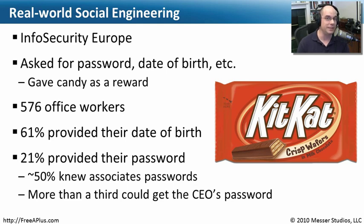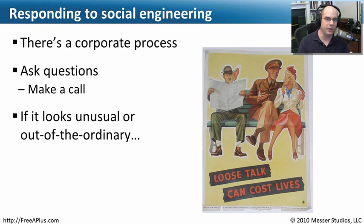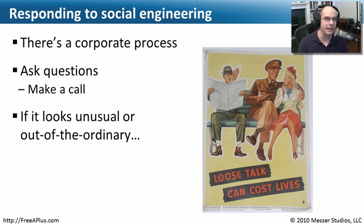Social engineering can take very simple forms — whether it's chocolate or donuts. The way to get passwords is apparently with sweets. You want to be sure the people in your environment are well trained to handle these situations. There should be a corporate process for odd phone calls. If someone is wandering around without a visitor badge, ask them who they are and why they're there. If you find a USB key in the parking lot or something looks unusual, it is unusual — take precautions. Because once someone is in your corporate network, all those secrets go out the door, and all your organization has is that data.